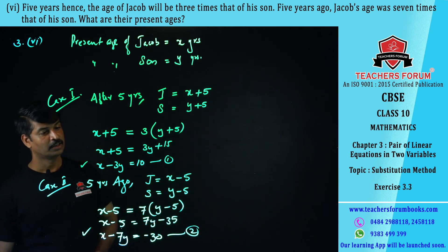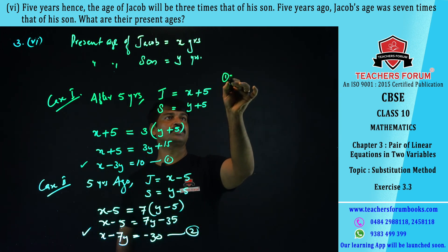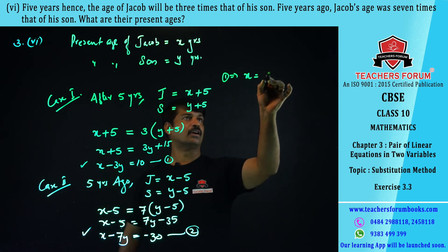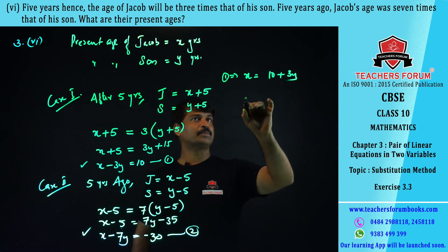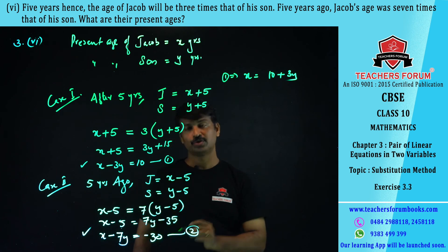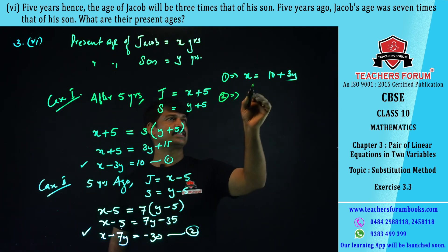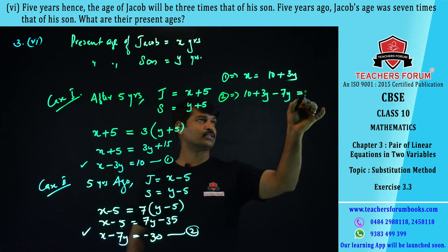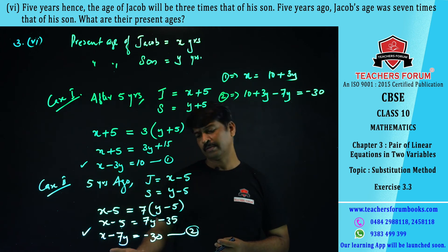From equation number one, x = 10 + 3y. Let this be equation number three. Substituting into equation number two: (10 + 3y) − 7y = −30.